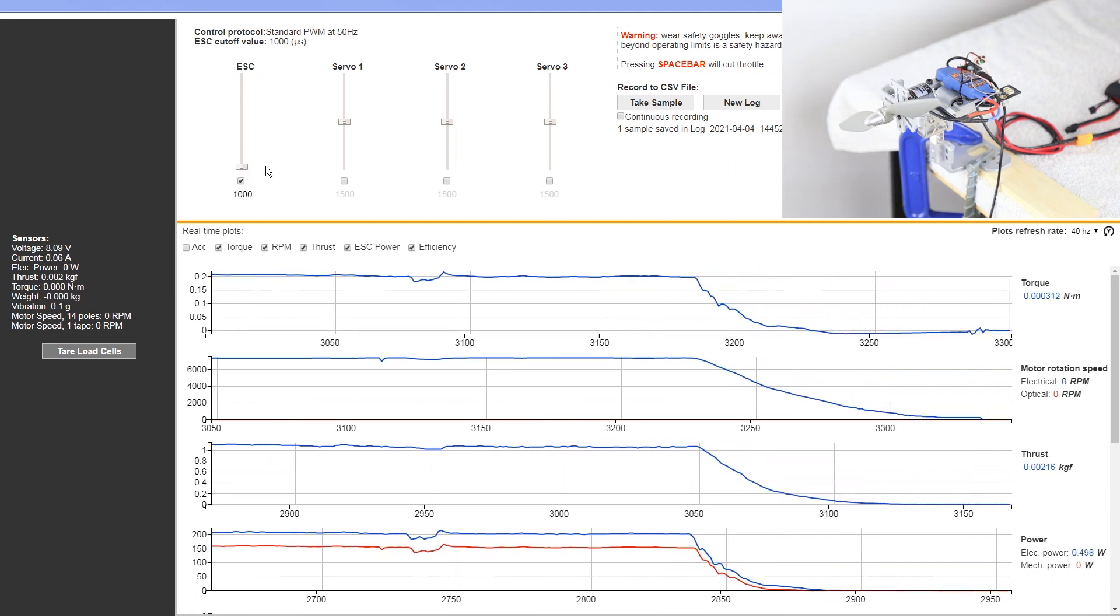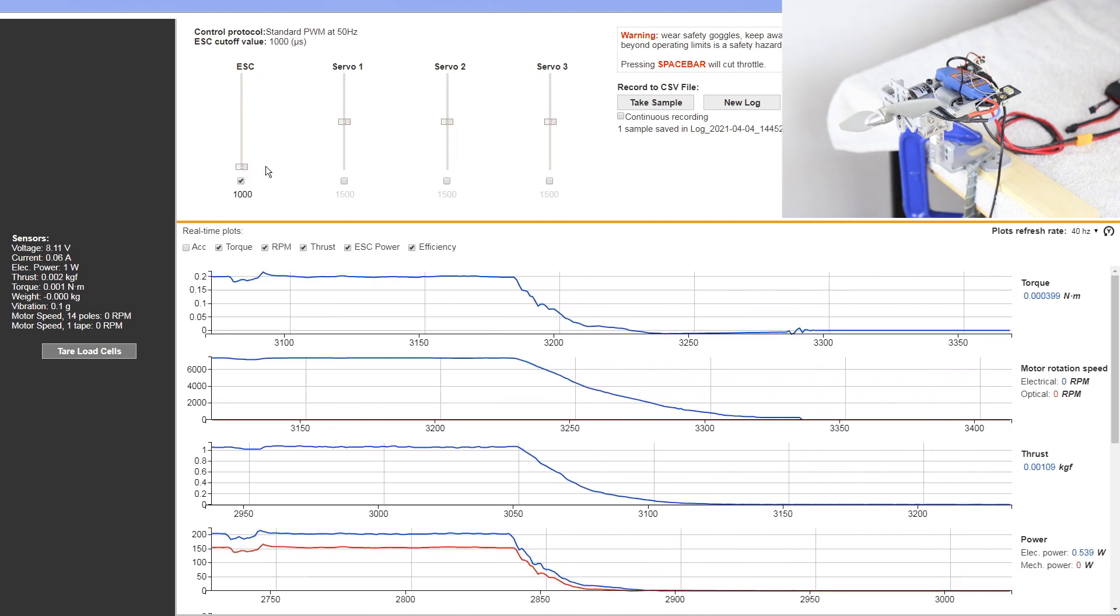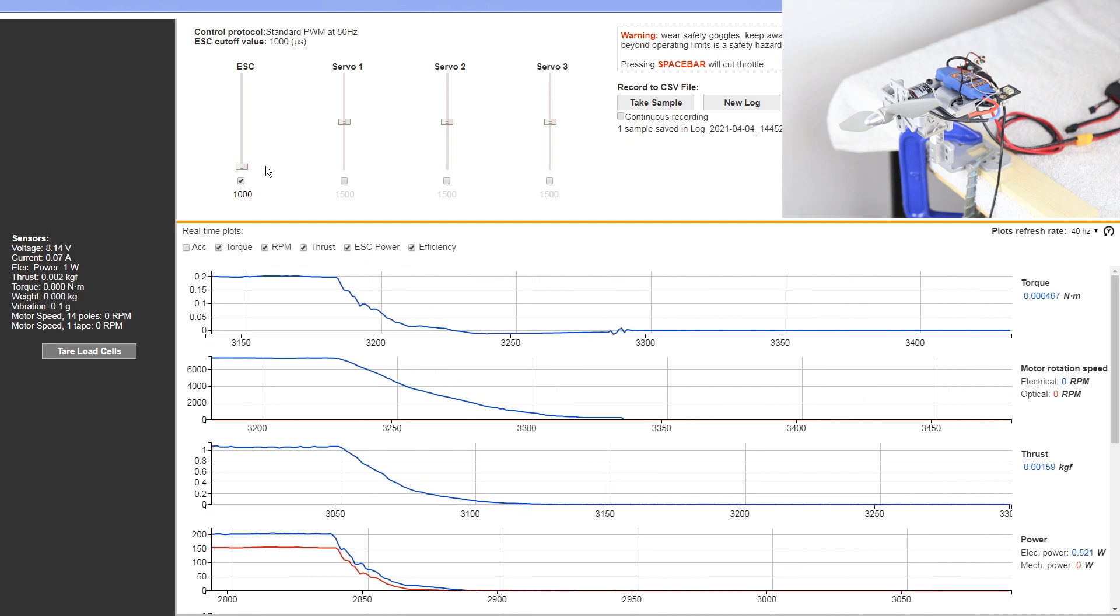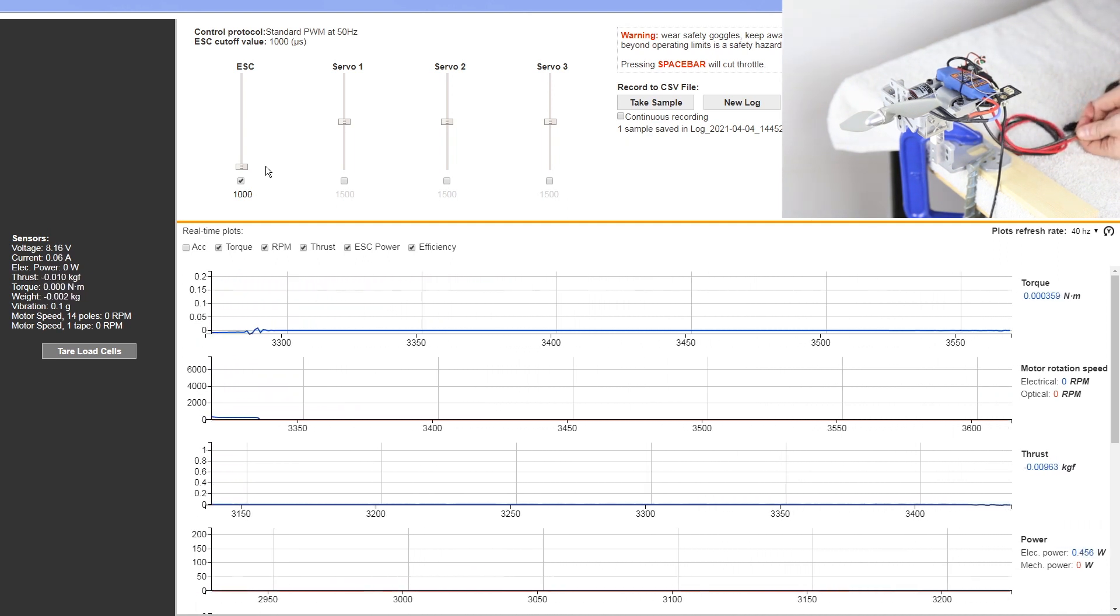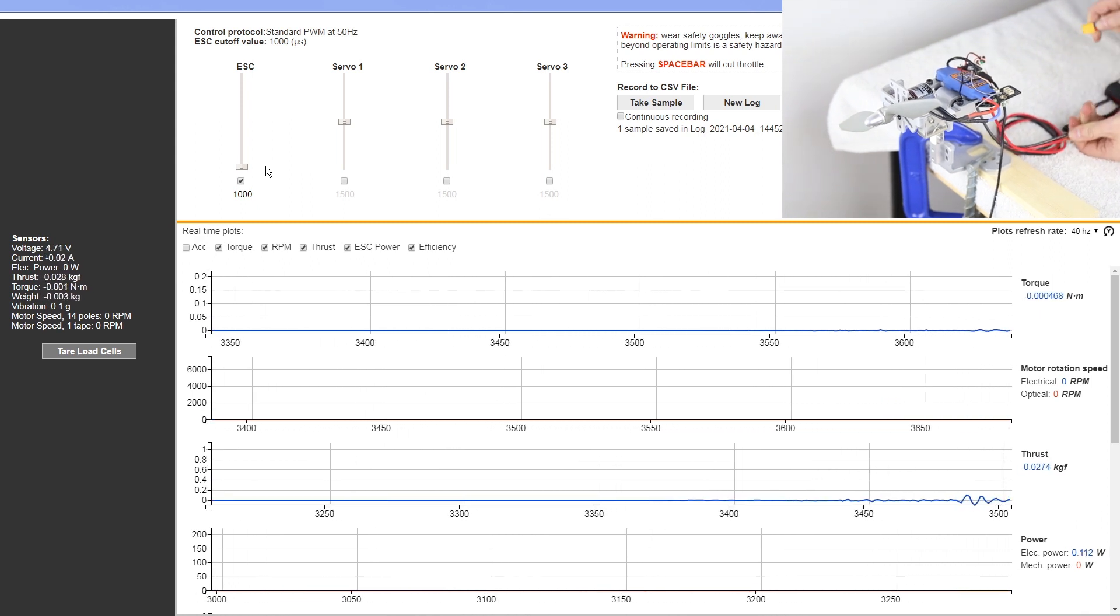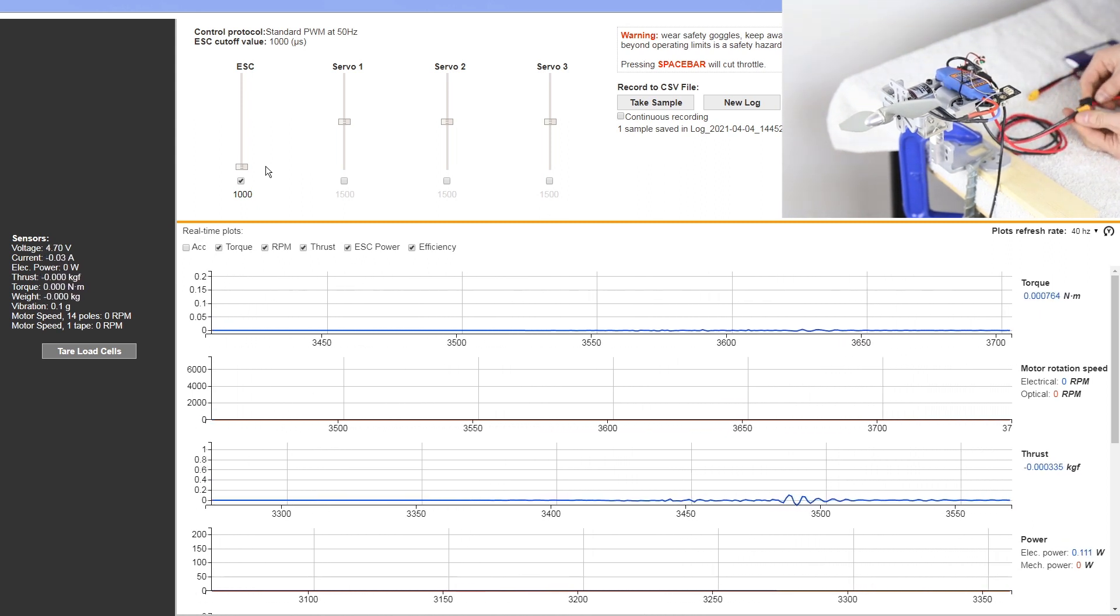And now we are able to take that measurement at that 7450 RPM so that we have that data point set. And then what we'll do is we'll come over and grab the battery, unplug the 2S pack, and then plug that 3S pack in so that we're able to go and take the next set of measurements and data points on our 3S battery.